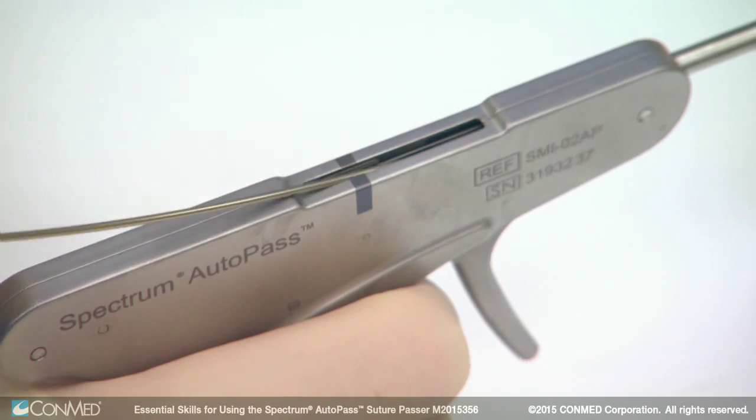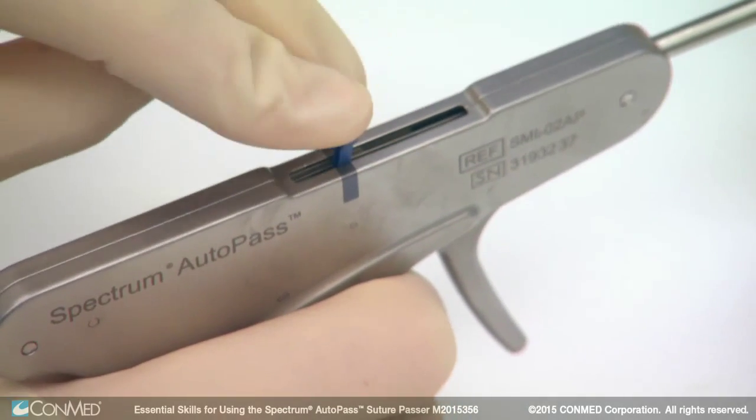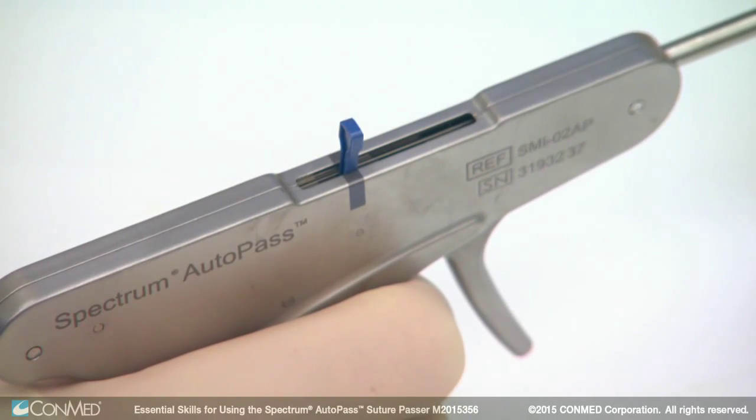When inserting the needle into the Spectrum Autopass, ensure that the blue tab is lined up with the laser mark and that the needle is fully seated in the slot.